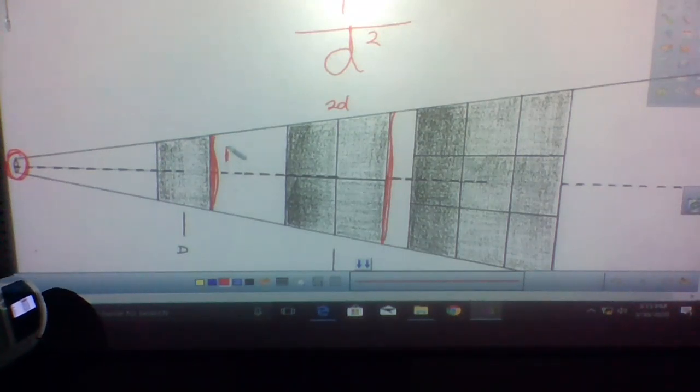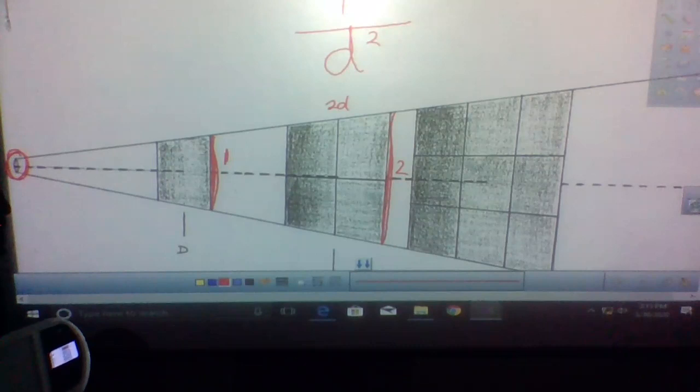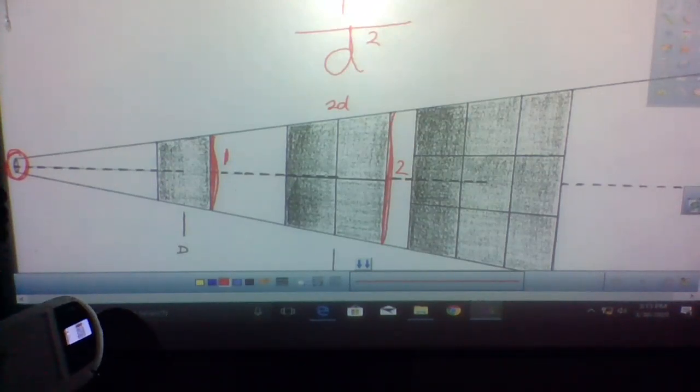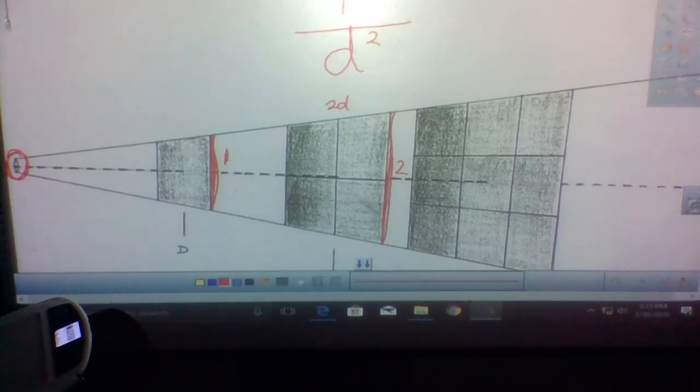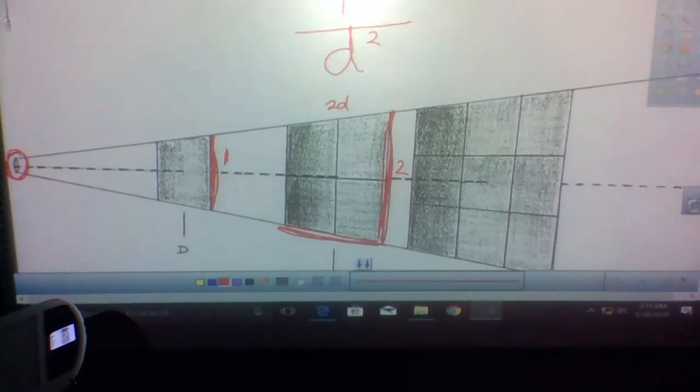Now, this has a value of 1. This has a value of 2. So some people would say, oh, it's spread out over twice the area. So the same amount of light is over twice the area, so it's dimmer. And some people will say, well, it's half the brightness. But not only is it spread out in this way, it's also spread out in this way because it spreads out in two dimensions. So look at this.